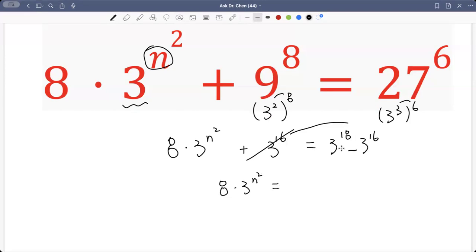And the right hand side, 3 raised by 18 is 3 raised by 16 times 3 raised by 2. Right, then minus 3 raised by 16, we can think as multiplied by 1. Then we have this common factor of 3 raised by 16. So let's factor that out.